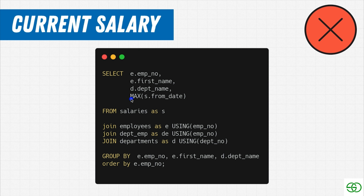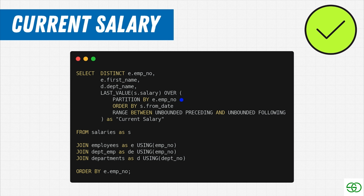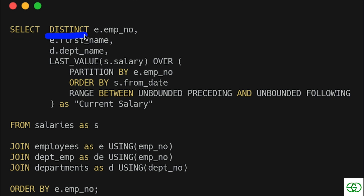We then said, what if we get the MAX from_date? That tells us when the most recent salary was assigned, but not what it was. So the entire purpose of this video is: how can we solve this with window functions?